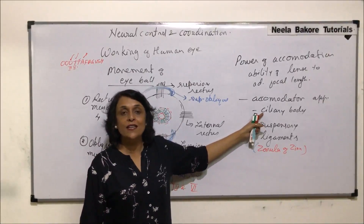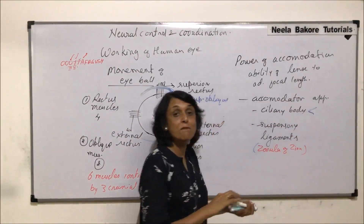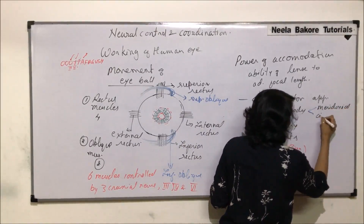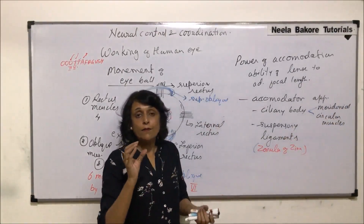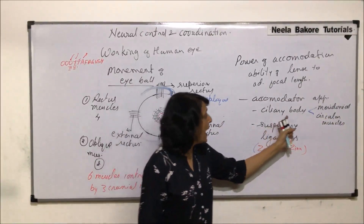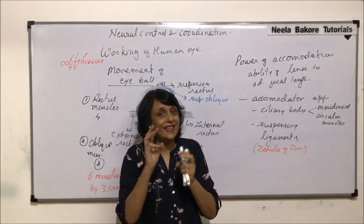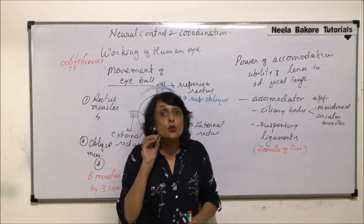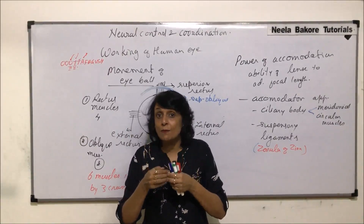The ciliary body has two types of muscles: meridional muscles and circular muscles. When these muscles contract, they pull the choroid — the second layer of the eye — inwards, making the size of the eyeball smaller. If the eyeball becomes smaller, the retina comes a little closer, so the image can be formed on it.